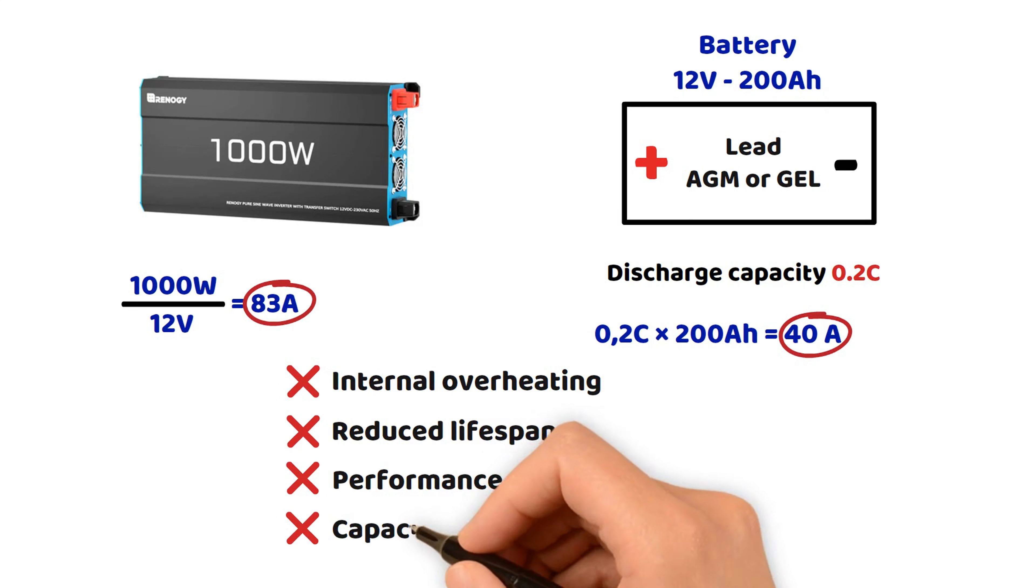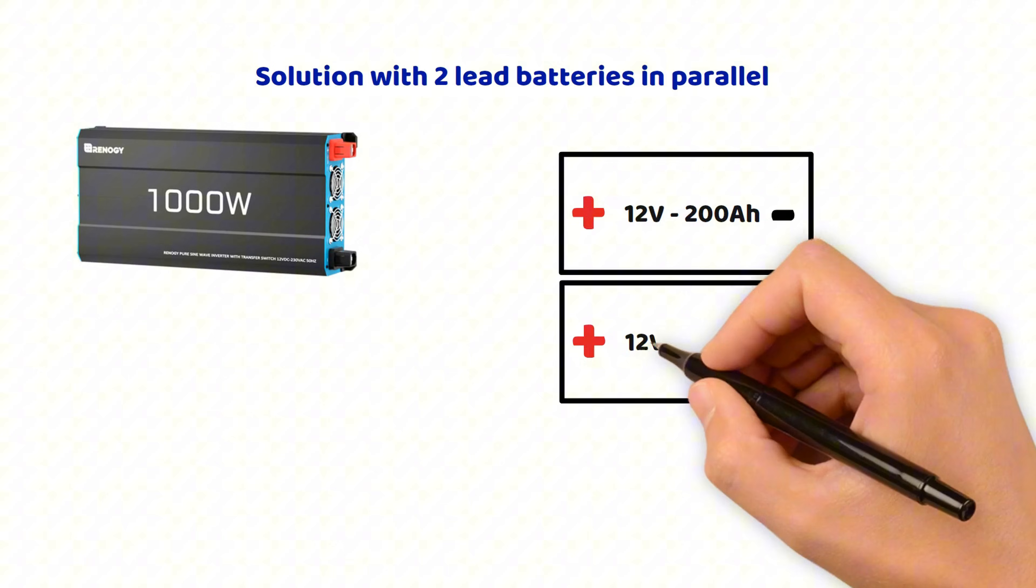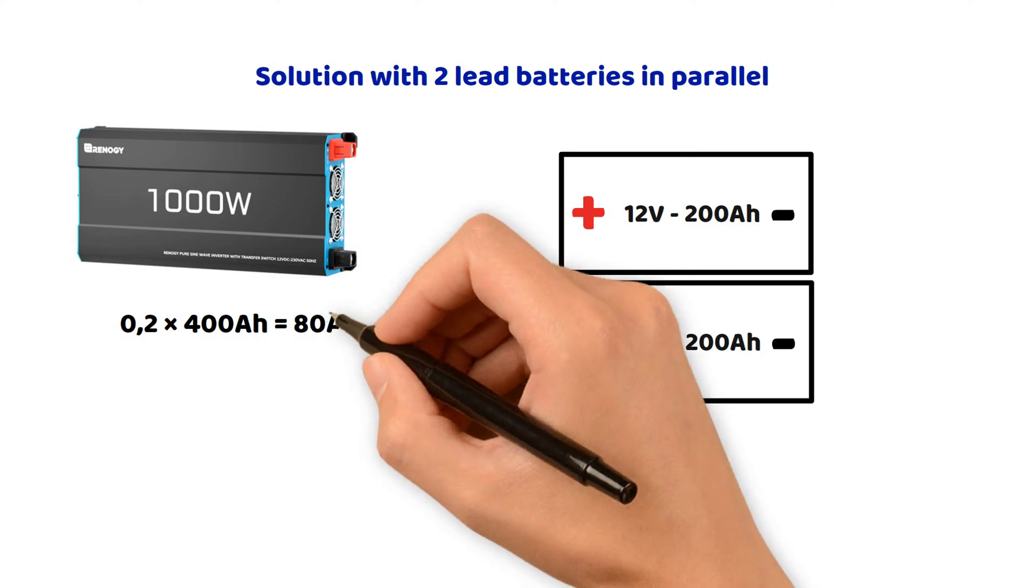But if we add a second battery in parallel to the first one, the total capacity will increase to 400 ampere hours. So the recommended current becomes 0.2 multiplied by 400 ampere hours equals 80 amperes. Since the inverter draws 83 amperes, the system becomes almost balanced. And in this case, we can say that the batteries will be preserved.